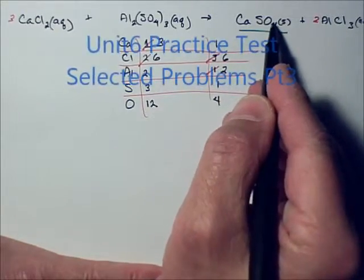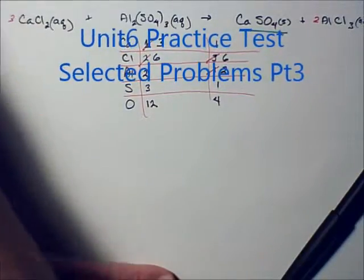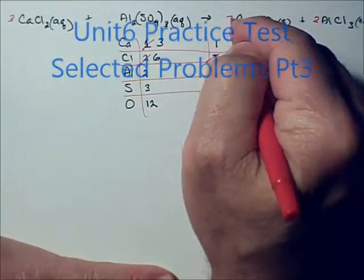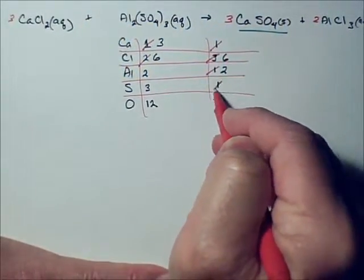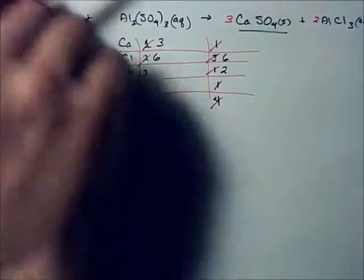So what coefficient do I put in front of this species? A three. Okay. So three calciums, and that's going to change the number of calciums and sulfurs and oxygens.